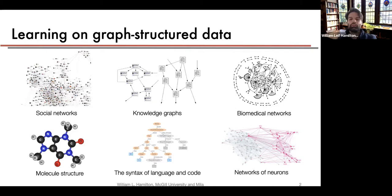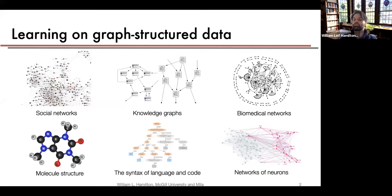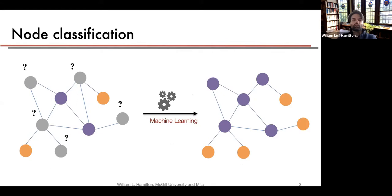Growing in popularity are biomedical networks, which can often be thought of as knowledge graphs where entities might represent proteins and edges represent interactions. Perhaps one of the most popular areas right now for graph neural network techniques is molecule structures — predicting the properties of molecules based on their graph structure. There are also exciting areas like representing syntax of language and code via graph or tree structures, and networks of neurons.